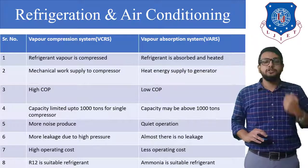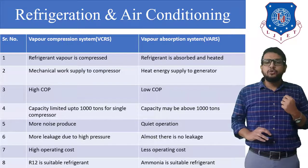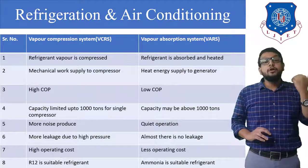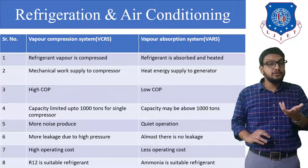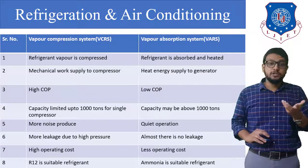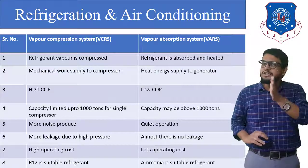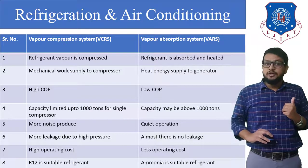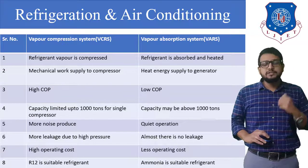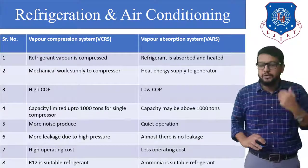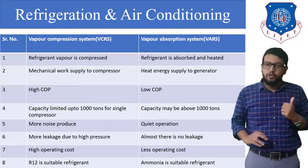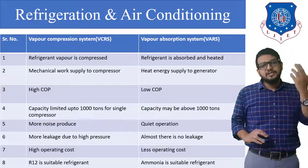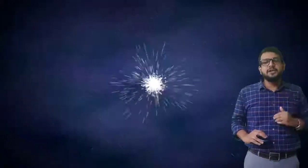Sixth, there is more leakage problem in the VCR system due to high pressure, whereas in the VAR system there is almost no leakage problem. Seventh, the VCR system has higher operating cost since electricity is consumed, whereas the VAR system only supplies heat energy to the generator so operating cost is much lower. Eighth, R12 is a suitable refrigerant for the VCR system, whereas ammonia is suitable for the VAR system because it can be easily absorbed in cold water. I hope you are clear with the VAR system and the differences. In the next session we will discuss the air conditioning system.